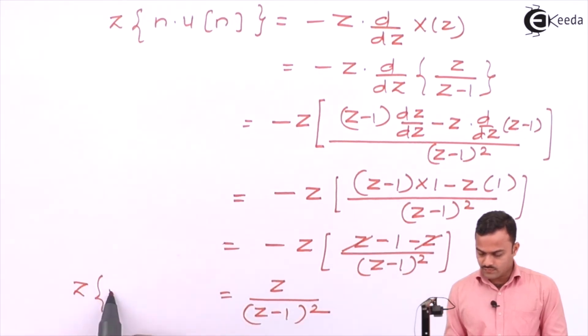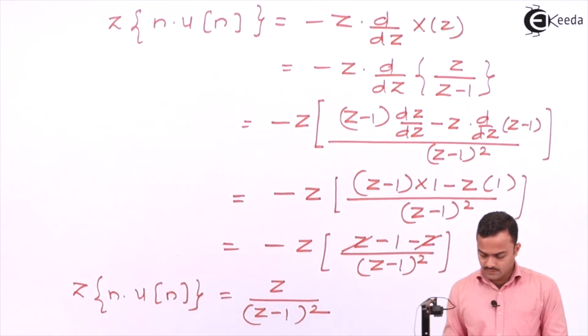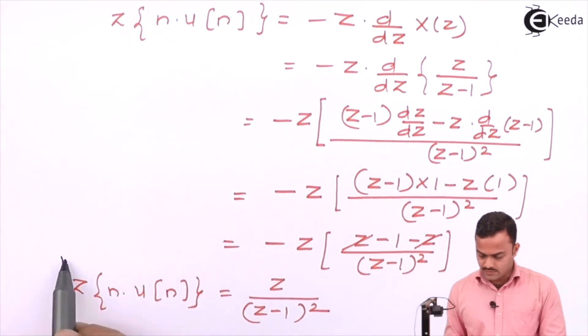So the Z transform of nu(n) is z/(z - 1)^2.